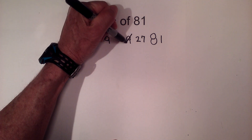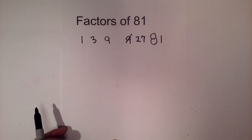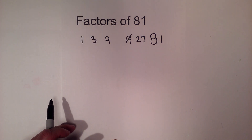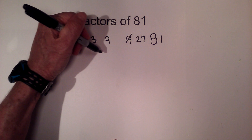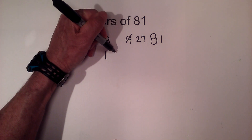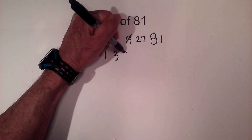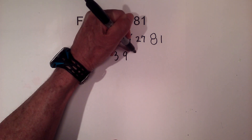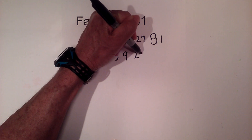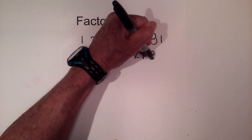Now I'm going to cross one of the 9's out so I don't write it two times. So the factors of 81 are 1, 3, 9, 27, and 81.